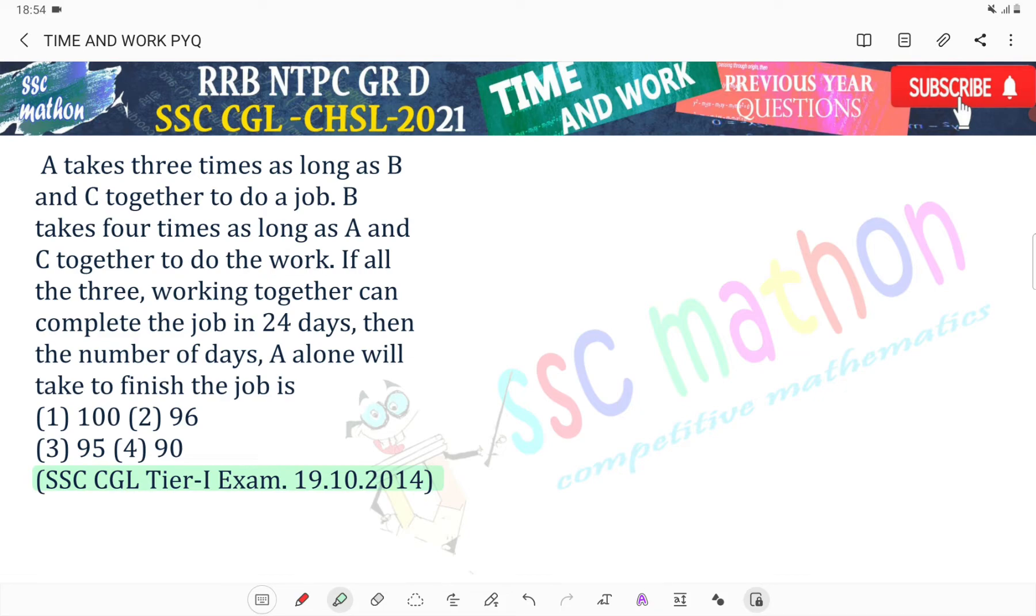The question is: A takes 3 times as long as B and C together to do a job. B takes 4 times as long as A and C together to do the job.